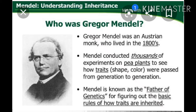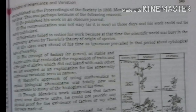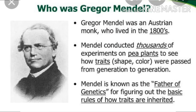Mendel's approach of using mathematics to explain biological phenomena was totally new and unacceptable to many biologists of his time. Though Mendel's work suggested that the factor, or gene, was a discrete unit, he could not provide any physical proof for the existence of factors or say what they were made of.